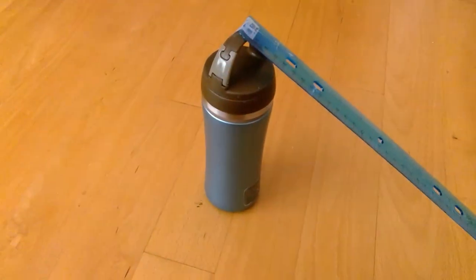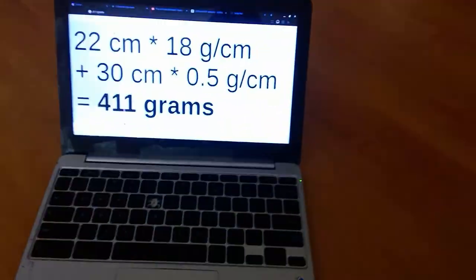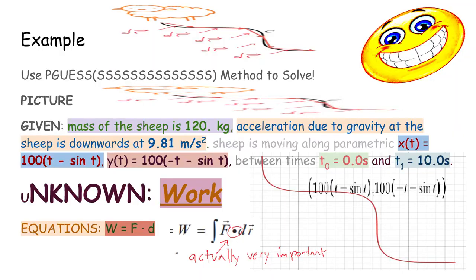So, if you do the math, then this wire has a mass of approximately 411 grams. Here's our example where we use this method to solve.